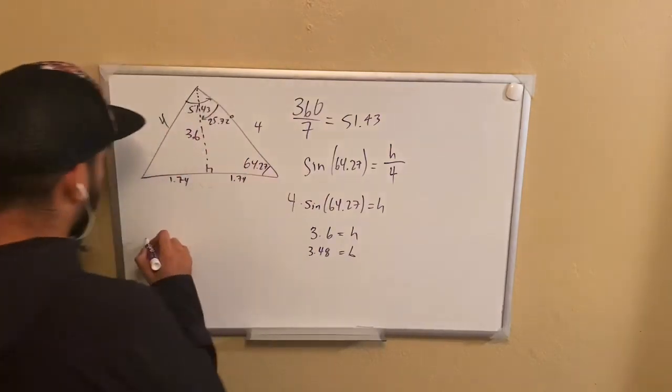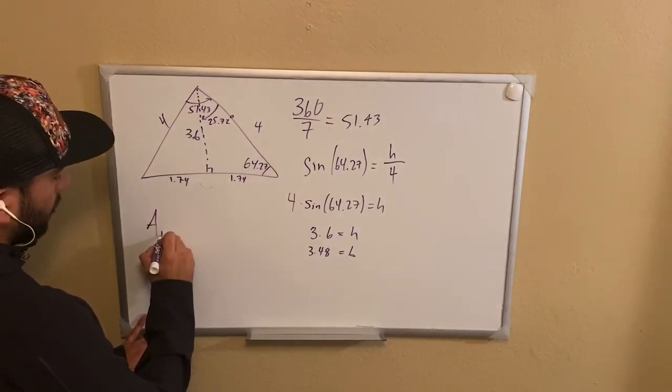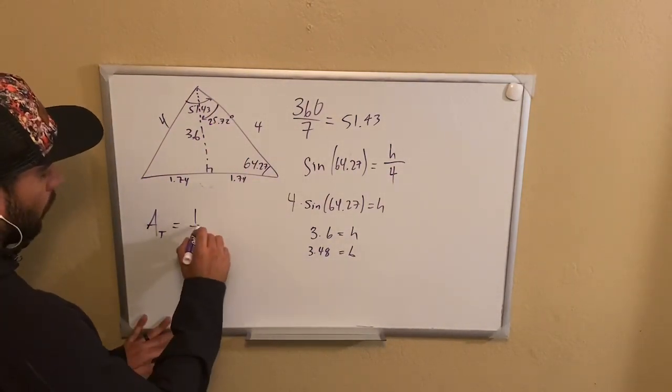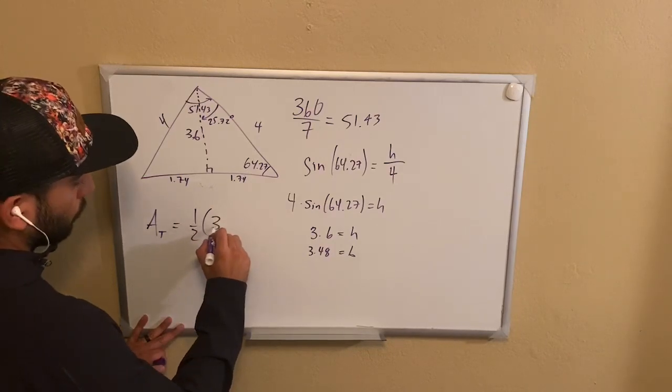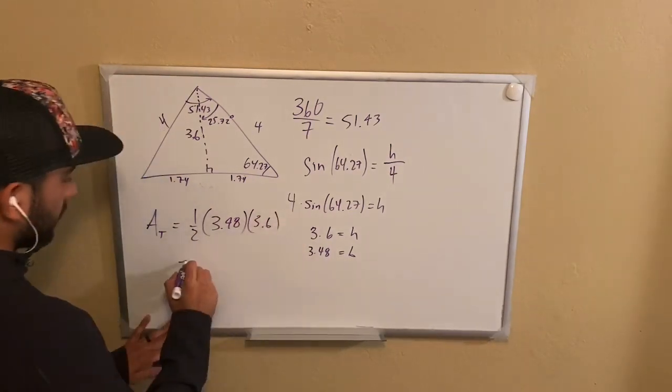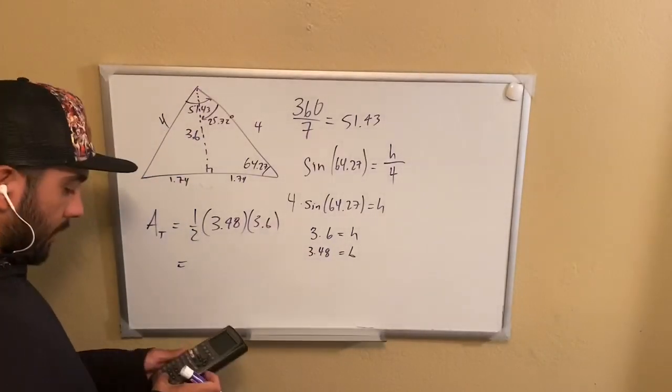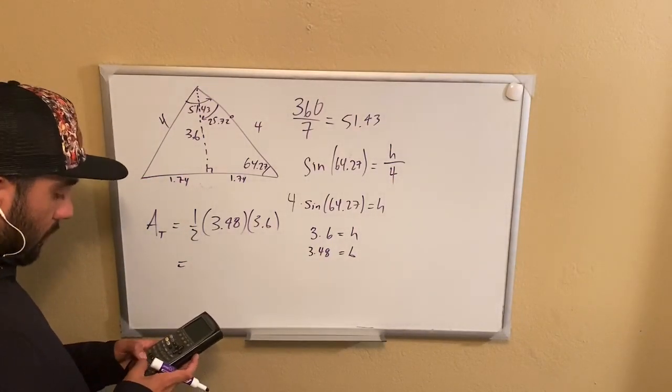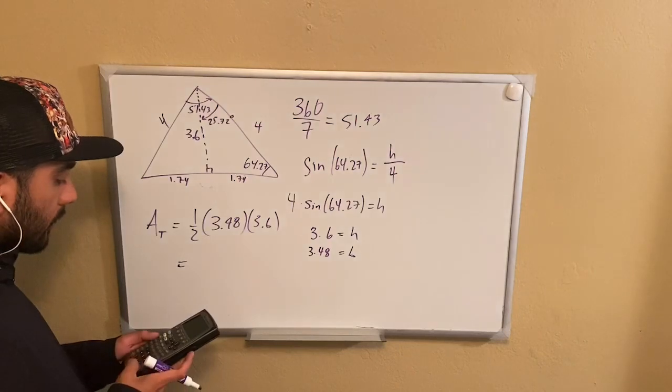Let's go ahead and find the area. The area of the triangle is equal to 1 half times the base, which is going to be 3.48, times the height, which is 3.6.